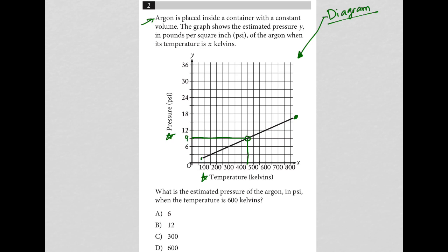So the pressure would be nine PSI. The question goes on to say, what is the estimated pressure of the argon in PSI when the temperature is 600 Kelvins? Okay, so let me just erase my little pinpoint method thing there and figure out where 600 is. It's here.